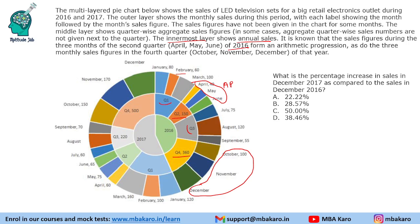One thing we can straight away fill in is: since this quarter sale is 150, the middle number will be 50, so the sales are 40, 50, 60. And here the quarter sales is 360, so the middle number will be 120. So these values can be filled.